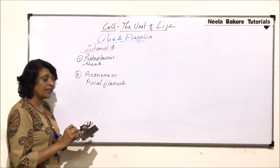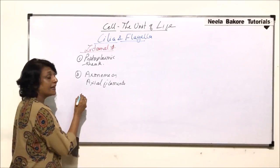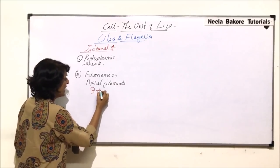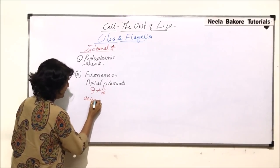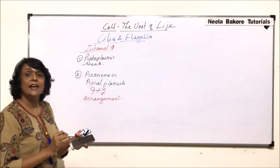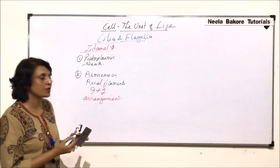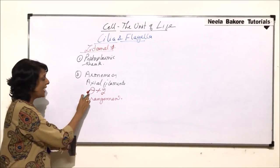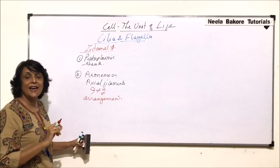In cilia and flagella, these axial filaments are arranged in a particular manner: there are two in the center and nine in the peripheral part, and that is why it is known as the 9+2 arrangement. There are two central microtubules and nine peripheral ones arranged towards the periphery.